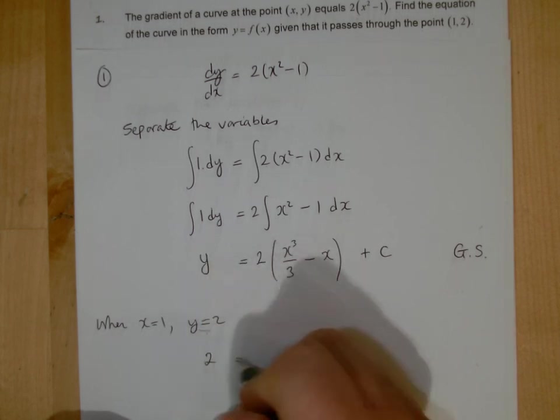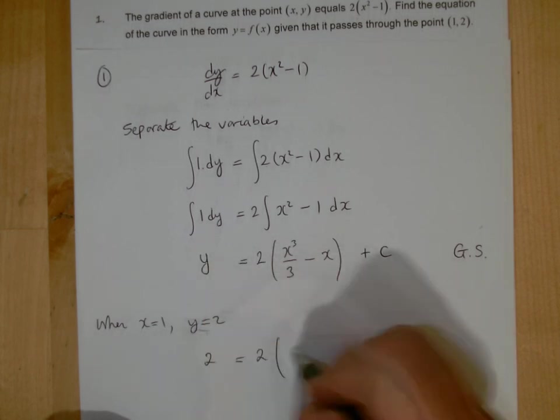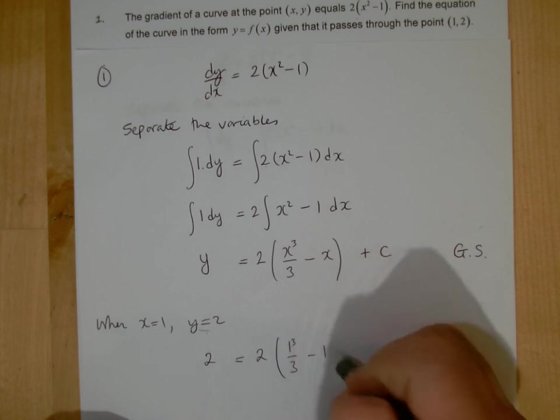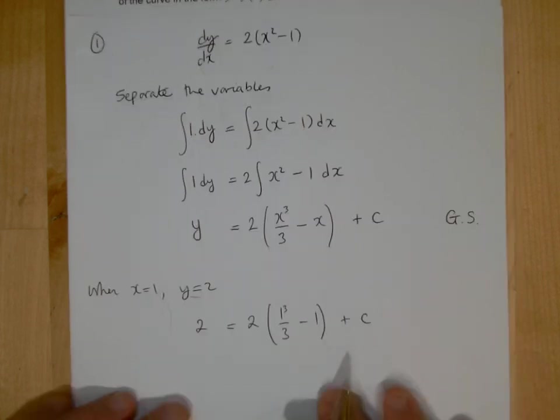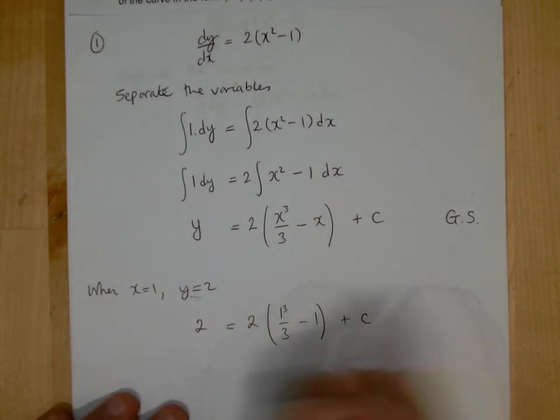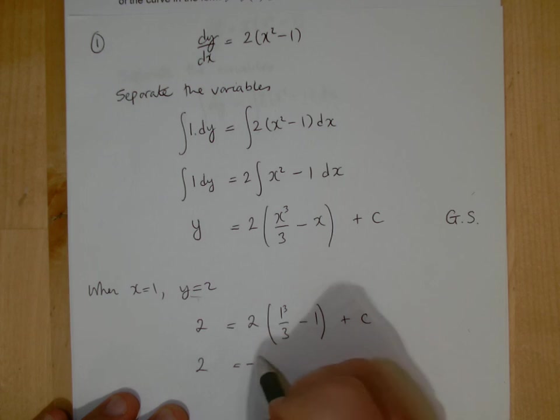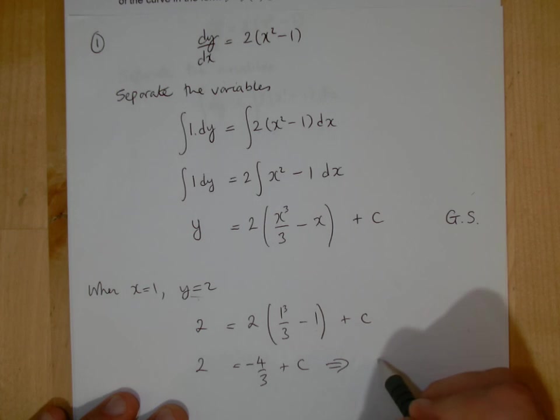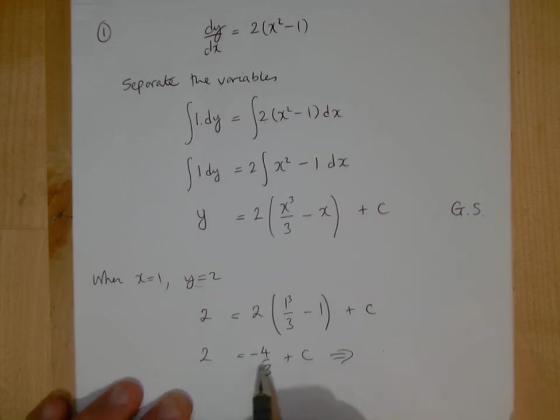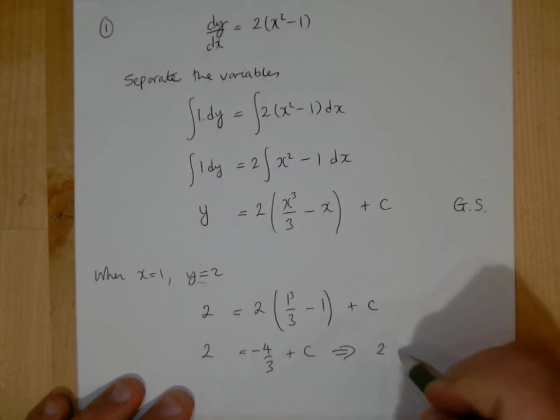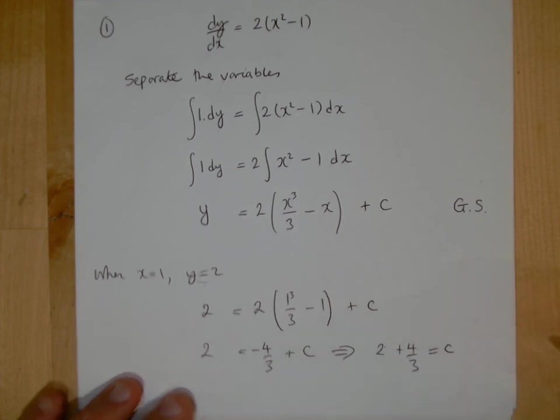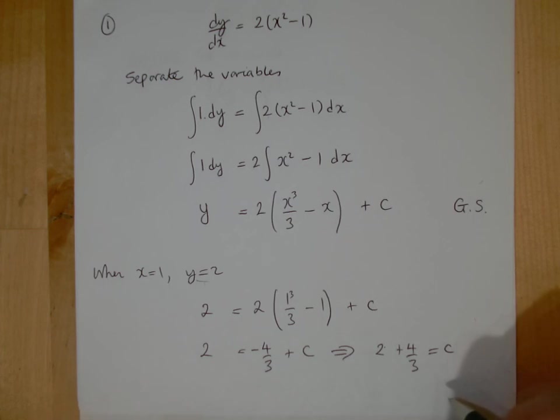So y is 2, so put it in, and x is 1. And that enables us then to work out what c is. So we've got 2 on this side, 1/3 in there, take away 1 is -2/3, times 2 is -4/3. And that enables us then to work out what c is equal to. So you can take that -4/3 over the other side, and that what c will equal to there, so that means that c will equal to 10/3.